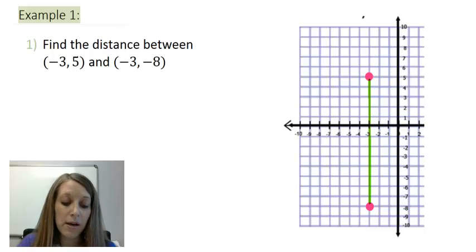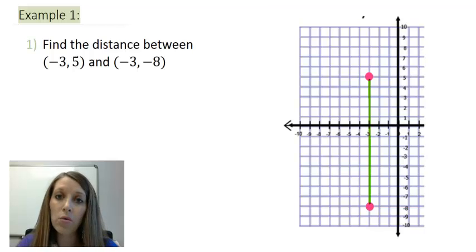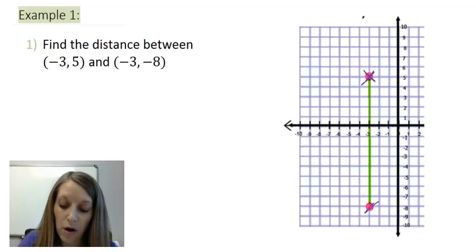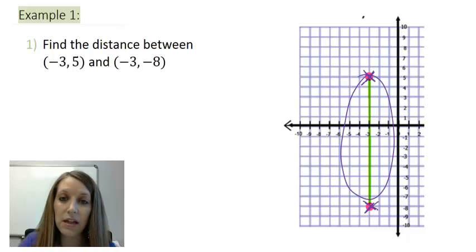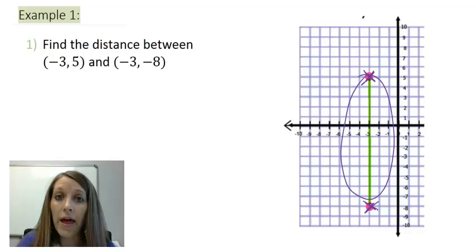Now, this is possibly one of the easiest examples that I can come up with because even though I've drawn it on two dimensions here, I'm really only looking at one dimension. Since I have the same x value for my points, that means I'm really only needing to calculate the distance of my y value. So ultimately, all I have to do is count the distance of my y values here.